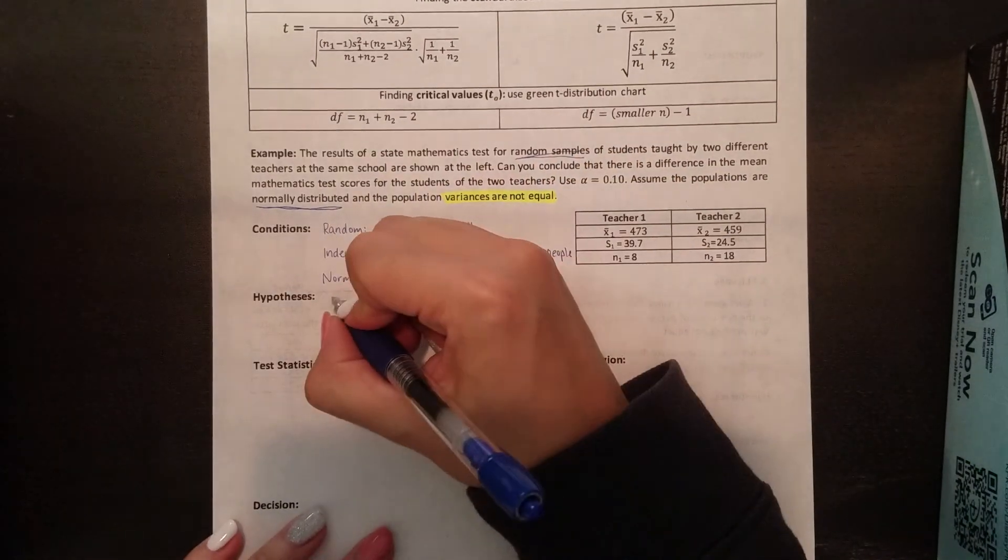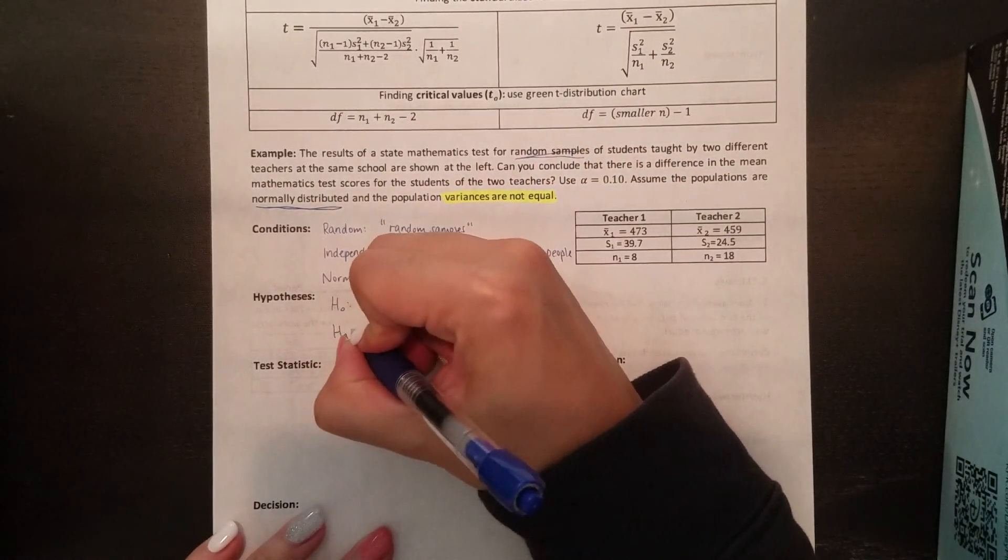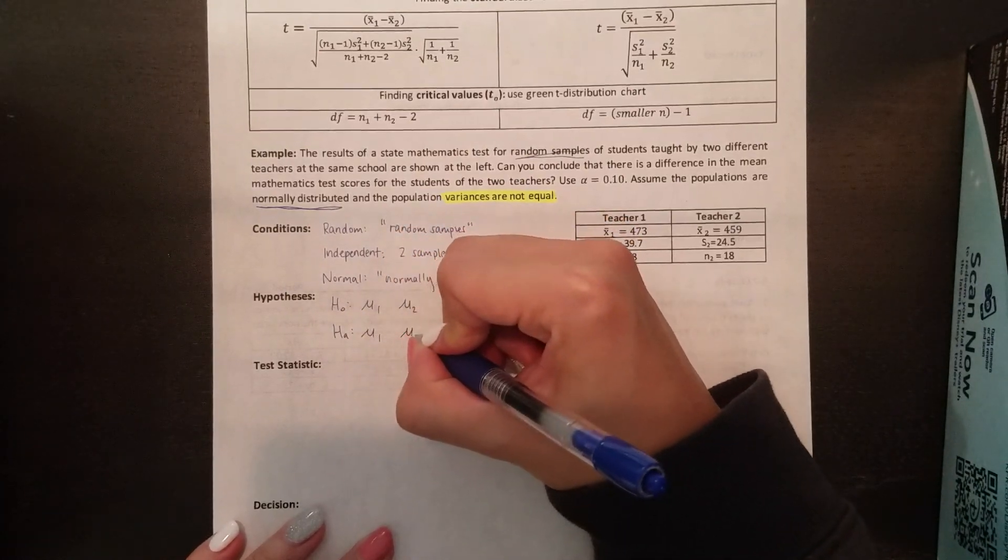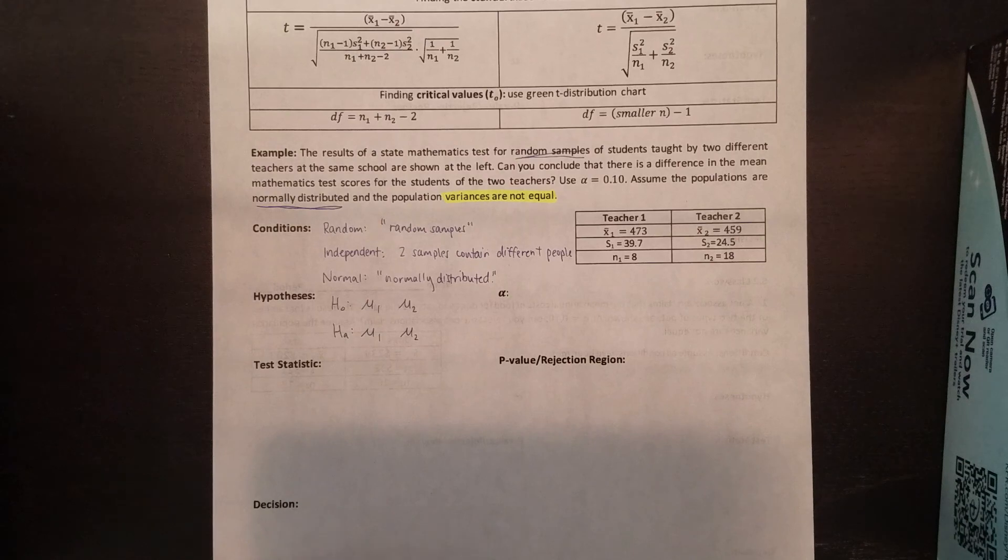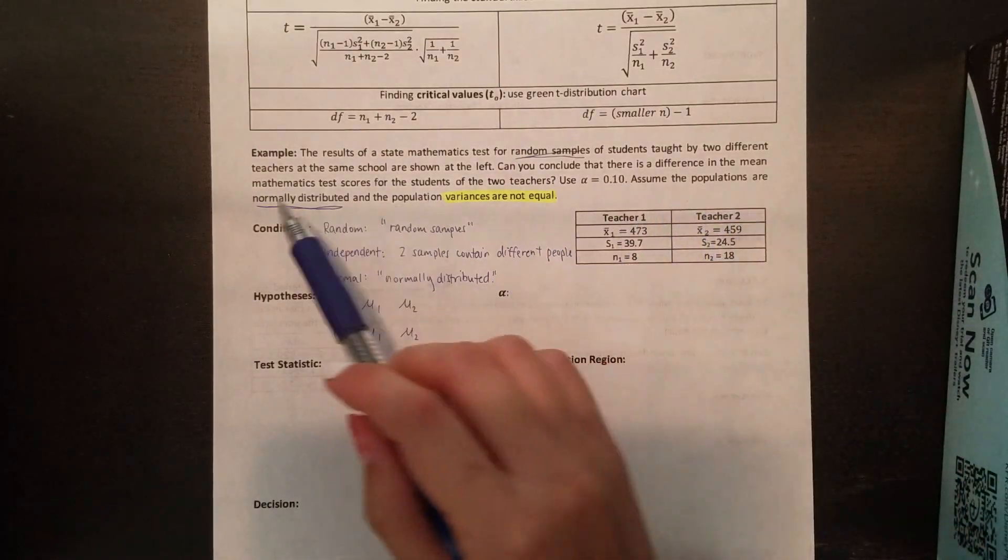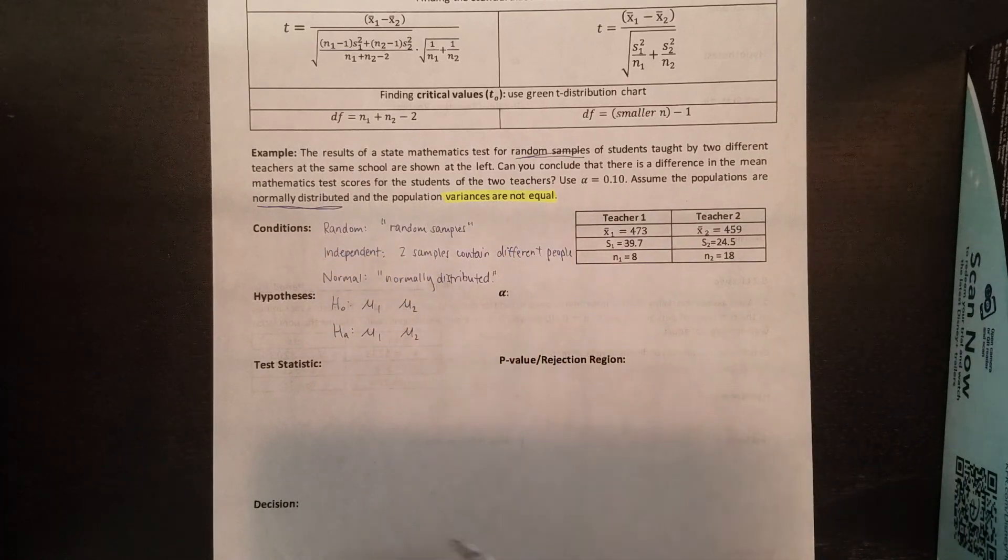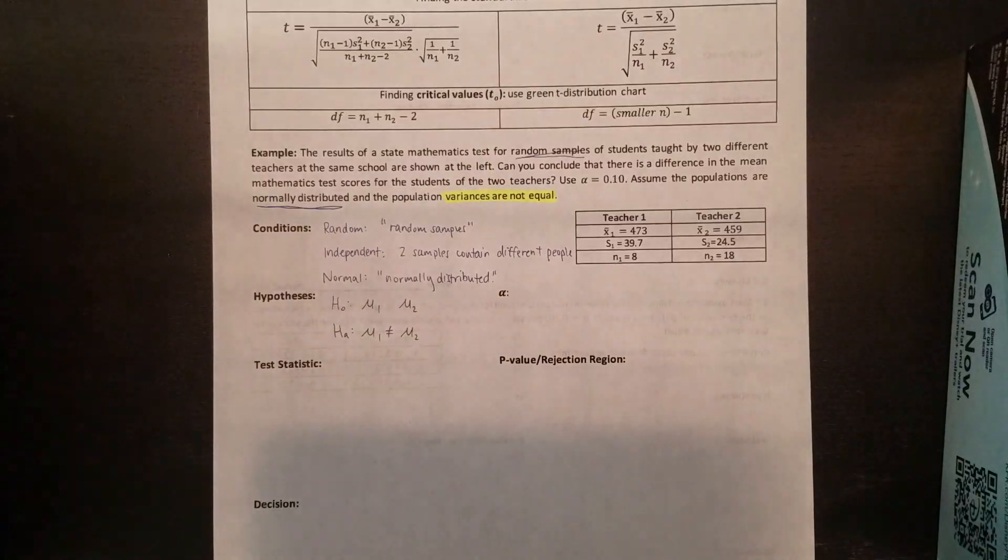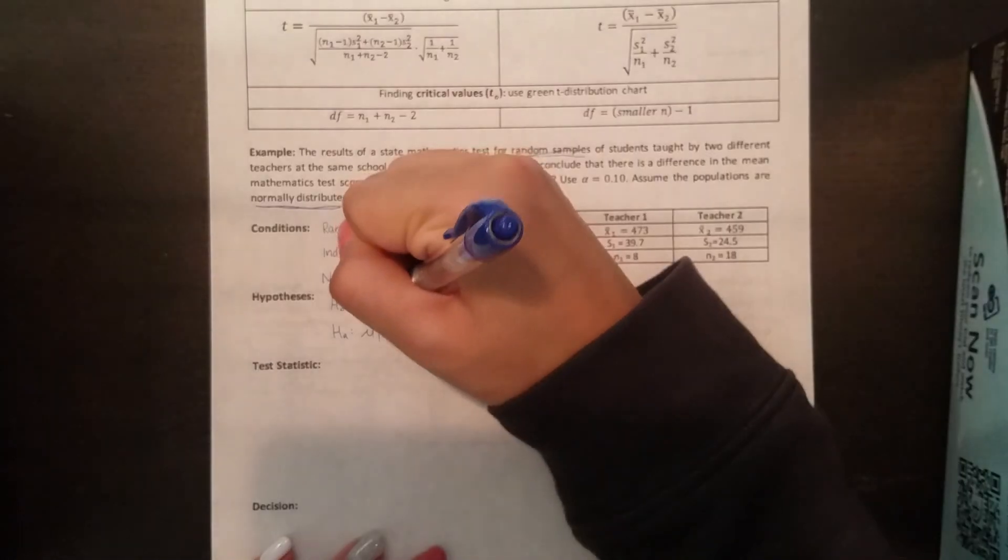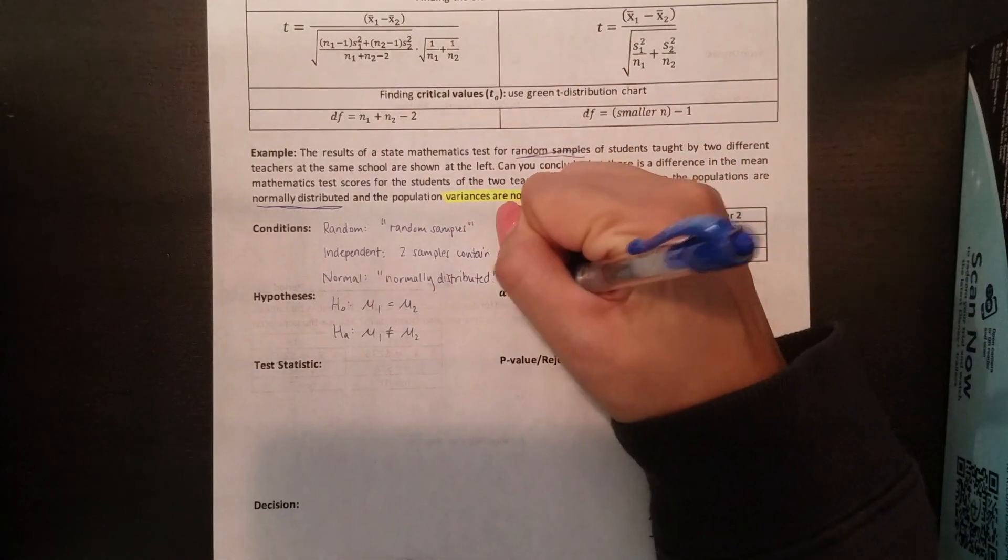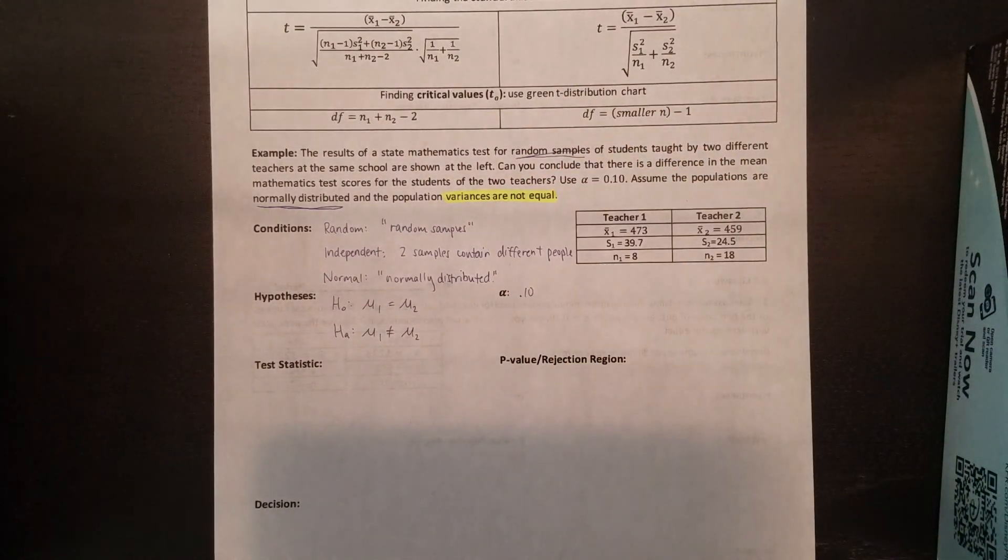Now we can proceed now that we've got everything checked off. For our hypotheses, this is exactly the same as how we did it last section. So we have our two means, μ₁, μ₂. In our problem, it said that can you conclude that there is a difference in the mean math test scores for the students of the two teachers. So it's either there is a difference or there's not. So different would be does not equal. And that always goes in H_A. So that means H₀ is going to be an equal sign. Alpha, they told us was 0.10.